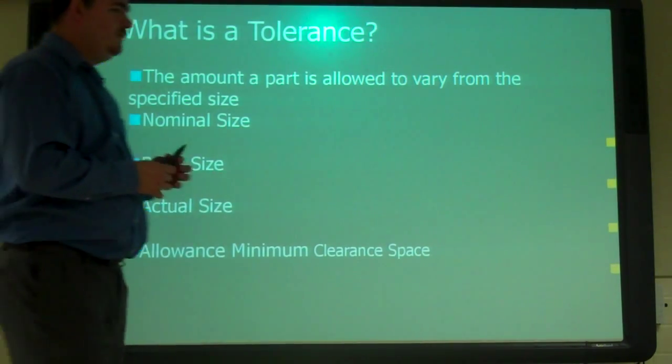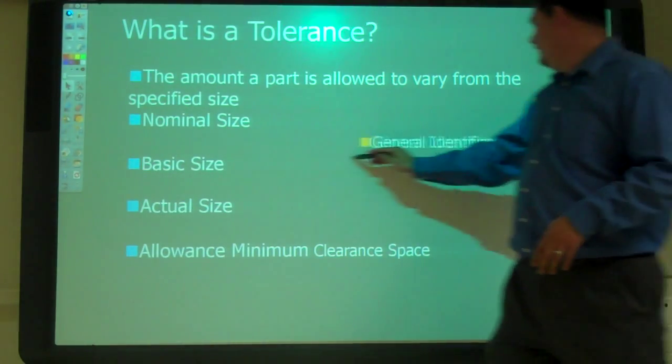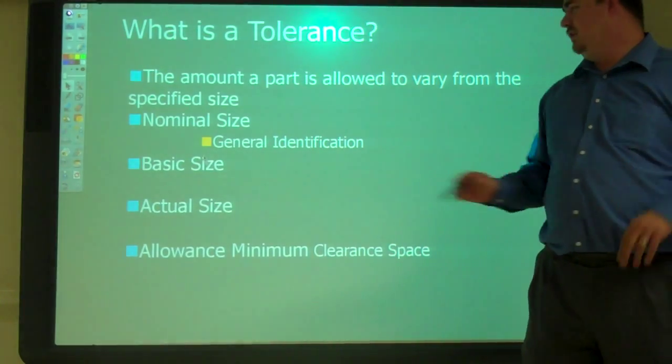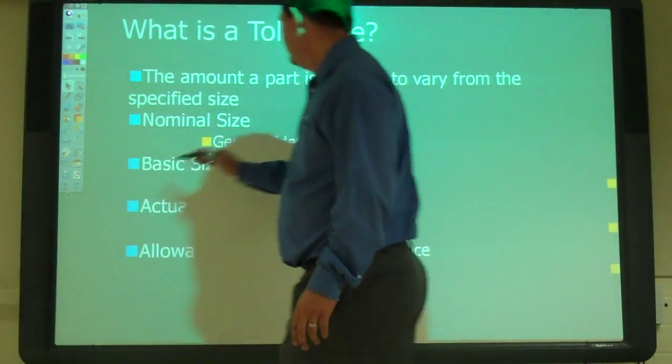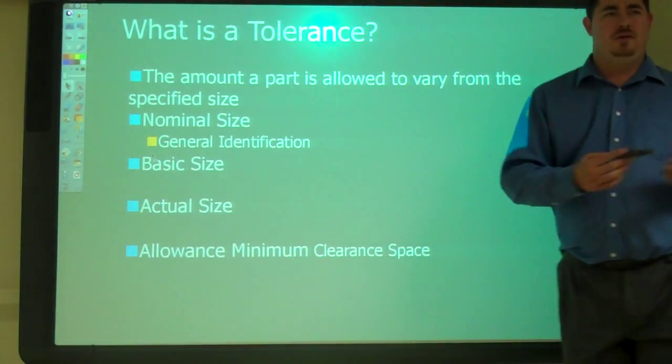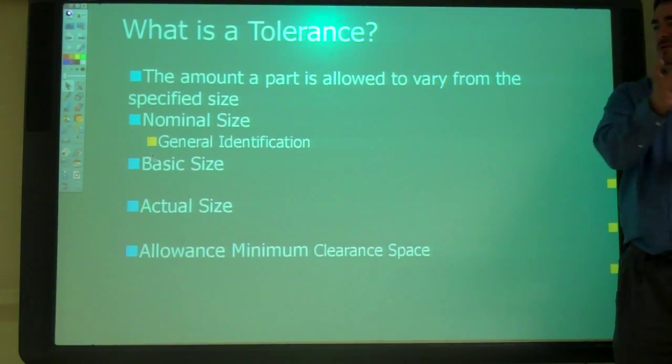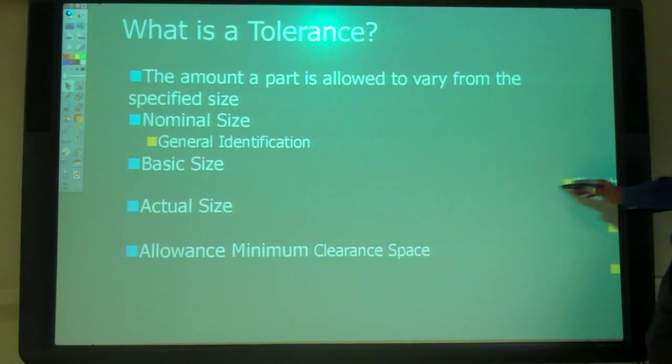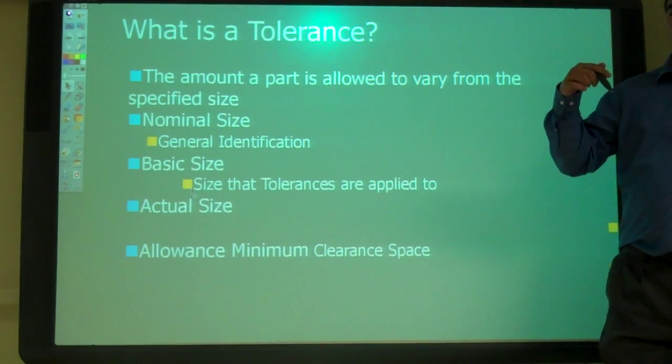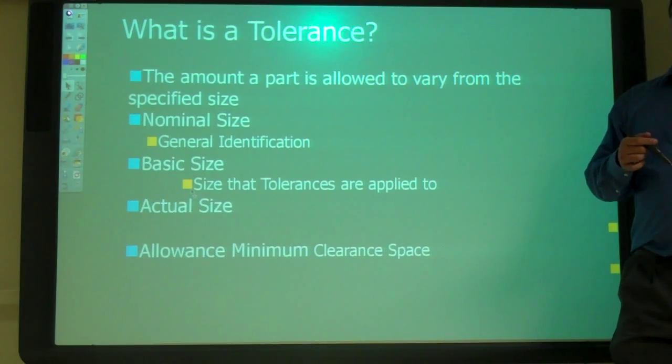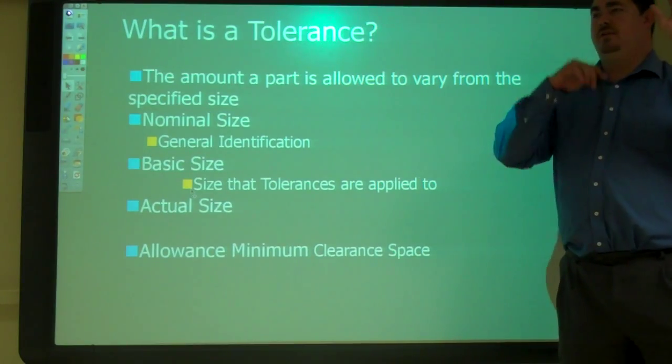So, we've already talked about that. So we have three basic types of numbers you might use. We all have a nominal size, which is kind of a general identification thing. So, like the hole's a half inch hole, but it's really not. It's kind of a little over, a little bit smaller, like that. The basic size is the size that the tolerance is applied to. So on that previous slide, the one inch, that's the basic size. That one inch is our perfect size and the tolerance is applied to that.